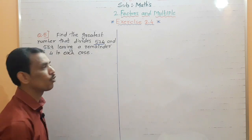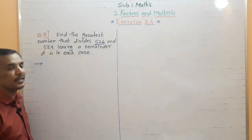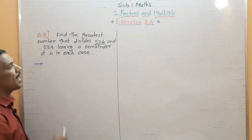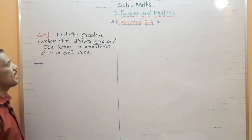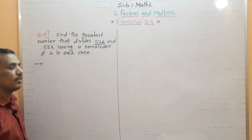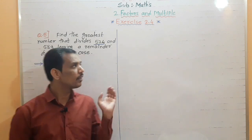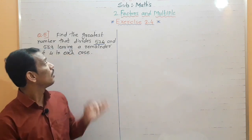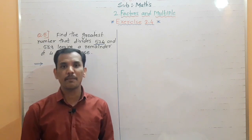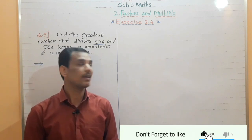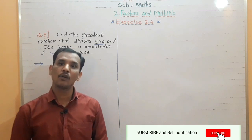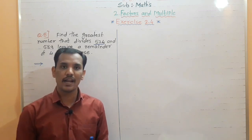Question number five: find the greatest number that divides 524 and 589 leaving a remainder of 4 in each case. Students, when you read the question, you can see that they have two numbers and there is a remainder mentioned. This question is telling us something, and we need to understand what to do — so read the question carefully.